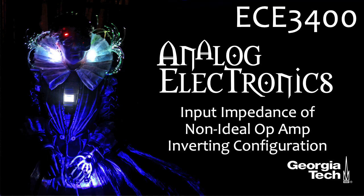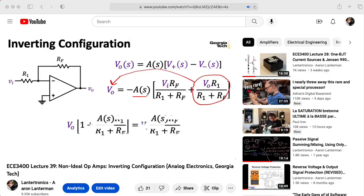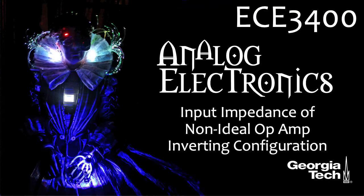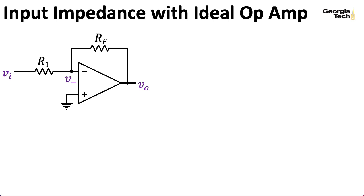Hi there. My name is Aaron Lanterman. I'm a professor of electrical and computer engineering at Georgia Tech. In the last lecture of EC3400 Analog Electronics, we looked at the voltage gain transfer function of an op amp in an inverting amplifier configuration when the underlying op amp had frequency-dependent gain. In this lecture, I would like to take a look at the input impedance of such a circuit. But before we talk about the non-ideal case, let's talk about the ideal case.